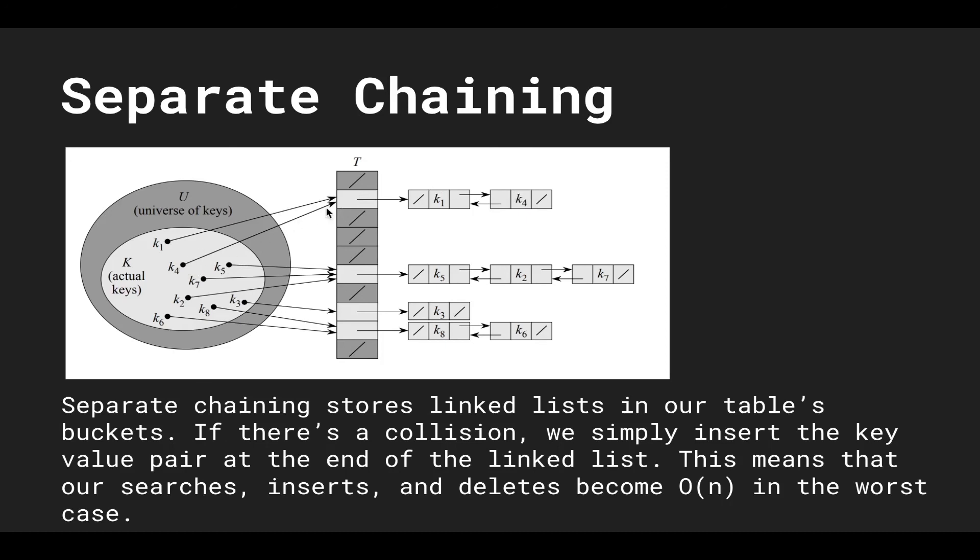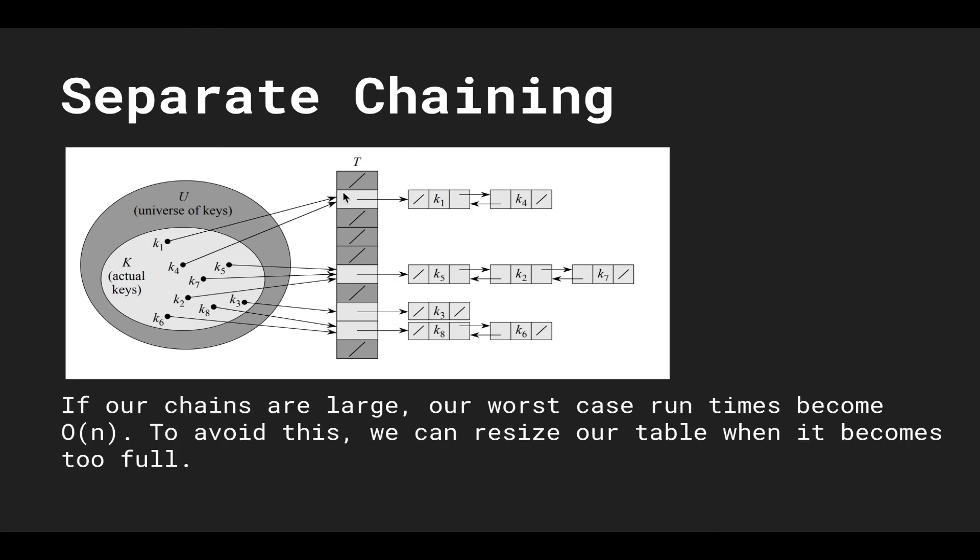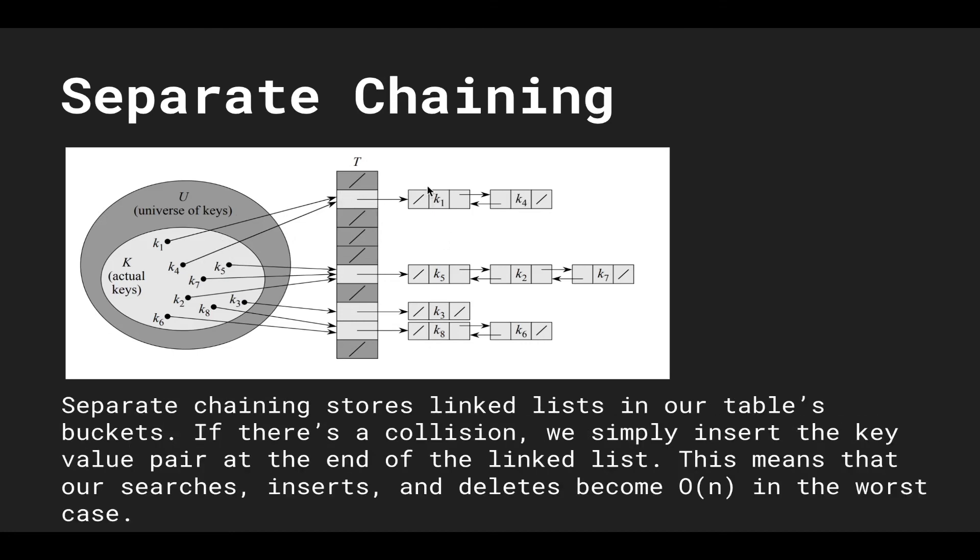So of course if you wanted to search or delete that means when we hash to the value it may not directly be the first most value. So we have to search the entire linked list and in the worst case our table could just have one entire linked list of all values. So the worst case is actually O of n.